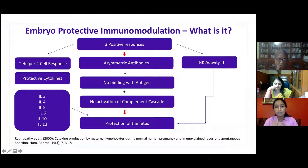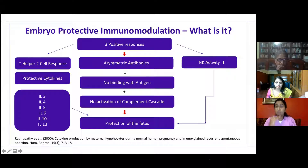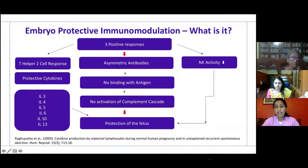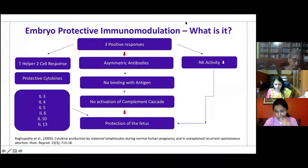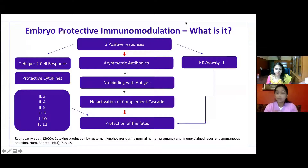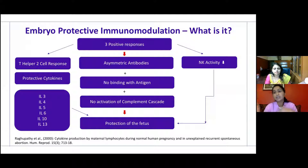Immunomodulation usually occurs in three responses. First, the T helper 2 response produces protective cytokines like interleukins 3, 4, 5, 6, 10, and 13, leading to protection of the fetus. Natural killer cell activity reduces. Asymmetrical antibodies do not bind to the antigen, preventing the complement cascade from being activated and again protecting the fetus.